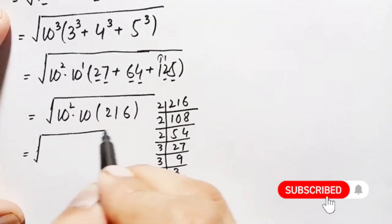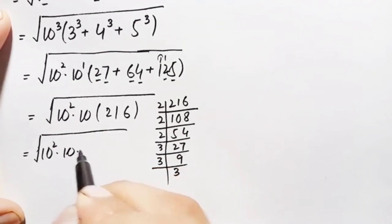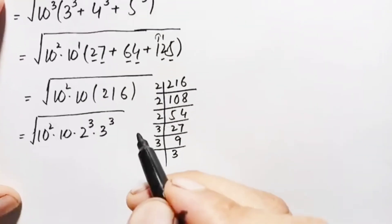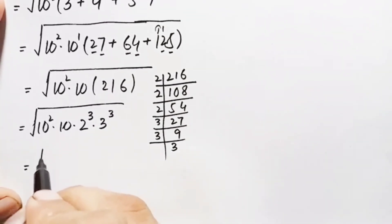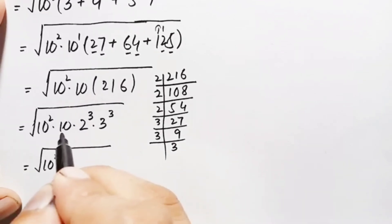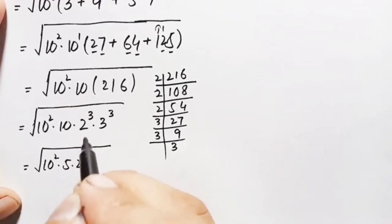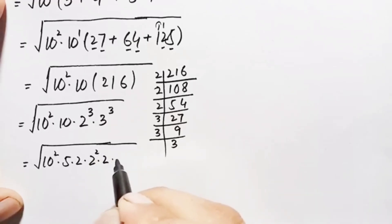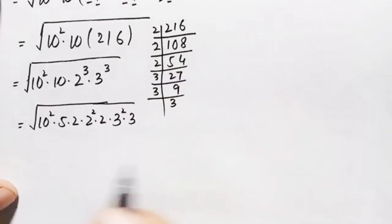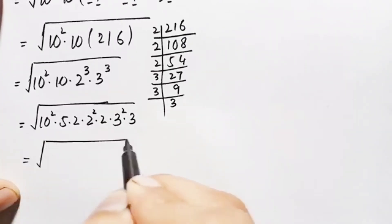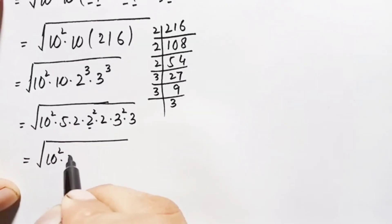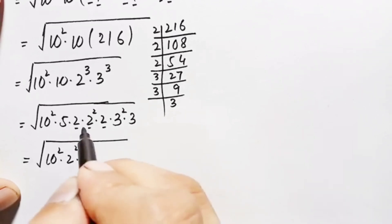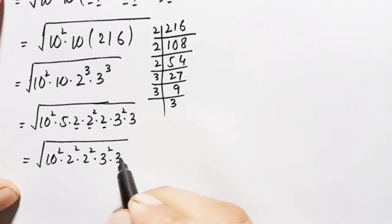The expression becomes the square root of 10 squared times 10 times 2 cubed times 3 cubed. We rewrite: 10 as 5×2, 2 cubed as 2 squared times 2, and 3 cubed as 3 squared times 3. Grouping the perfect squares: 10 squared times 2 squared times 3 squared, with remaining factors 2×3×5 = 30 under the root.